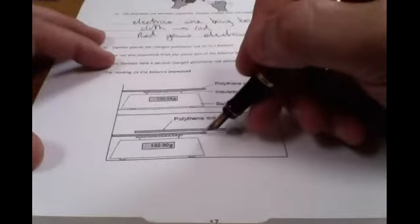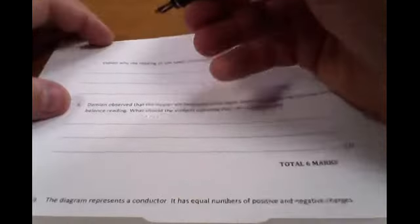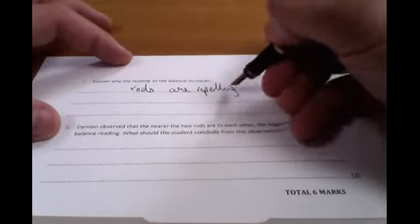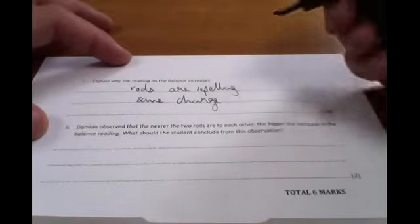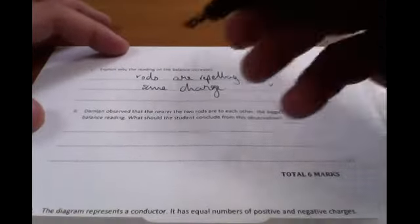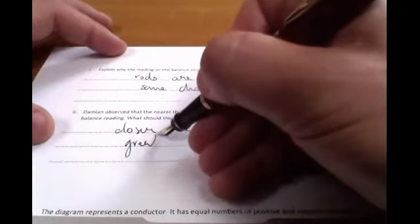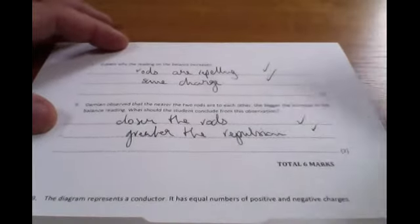Okay, now as this polythene rod is brought near to the balance, we're getting an increase in reading. Why is that? Well very simply it's because the rods are repelling. And why is that? Because they have the same charge. Remember opposites attract, like repel. And as you move them closer, so the closer the rods, the greater the repulsion. That's why the force increased.